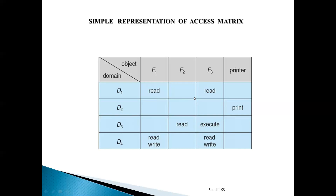Our topic is about revocation of access rights. You create this access matrix, implement it, and give some access rights for objects in a particular domain. For example, if a process is executing in domain D1, it will be able to do read operation on file F1 and read operation on file F3. But objects may be shared by different users, and after some point the file owner may decide he doesn't want to give this access right to some set of users — that is called revocation of access rights.